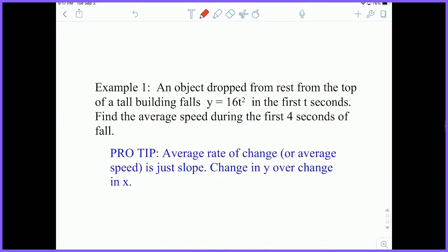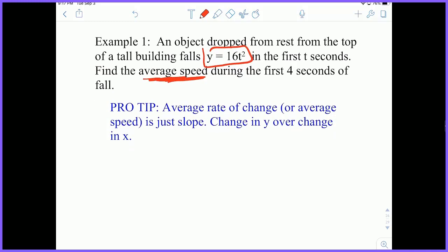Let's first start by talking about average rate of change. So it says, example one, an object dropped from rest from the top of a tall building falls y = 16t² in the first t seconds. Find the average speed during the first four seconds. Well, just a little pro tip for you, very important. Average speed or average rate of change is just slope. Change in y over change in x. In order to do that, you just simply need two coordinates.